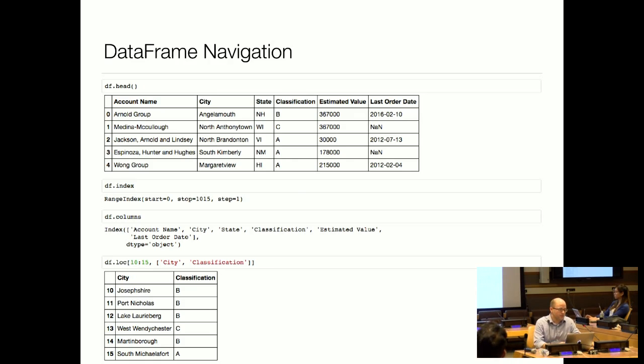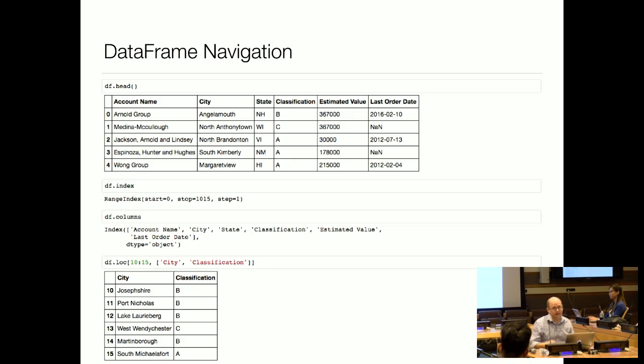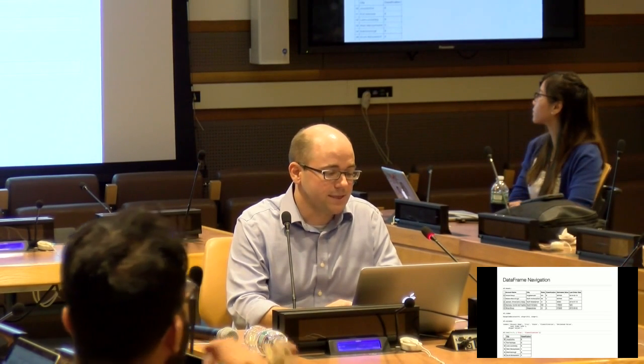A couple of things to point out about the DataFrame. You can see that across the top we have in bold our column names — that is our column index. And then on the left-hand side we have a row index, which we see as zero through four at the top of our DataFrame. With those two indexers, that gives us a ton of power to slice the DataFrame and look at things in different ways. You can see that the index and the columns are both attributes on the DataFrame object — there's a range index for rows and a columns index.